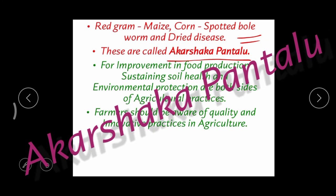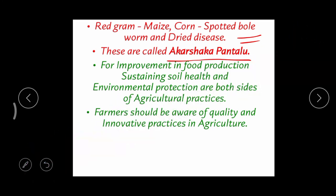For improvement in food production, sustaining soil health and environmental protection are both essential sides of agricultural practice. If we want to increase food production, we must maintain soil health and environmental protection. But today, because of greed, we are overusing chemicals causing water, air, and soil pollution. The farmer should be aware of maintaining good quality and innovative practices in agriculture.